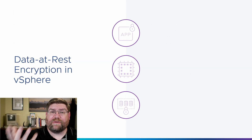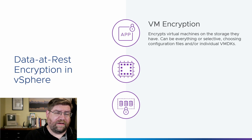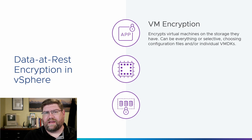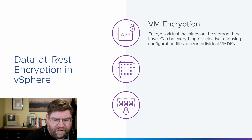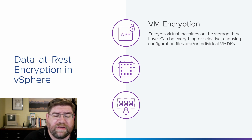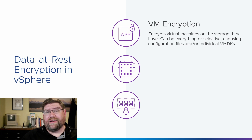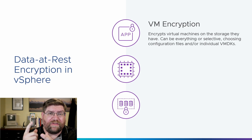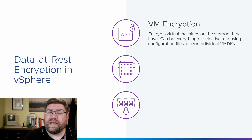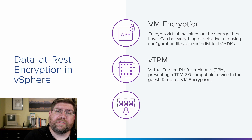Let's talk about the context of data at rest protections. VM encryption is the old standard solution, introduced in vSphere 6.5. It basically encrypts VMs as they sit on disk — whatever disk they're on, we can encrypt it. We can encrypt the whole VM, just some VMDKs, all the VMDKs, or just the home files and configuration files, like the NVRAM file, which is where VTPM stores its data. VTPMs use VM encryption to store their secrets.